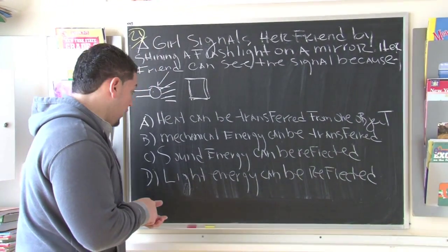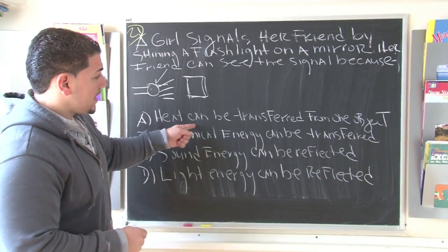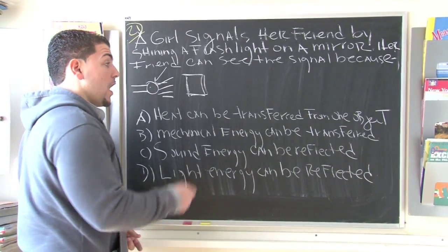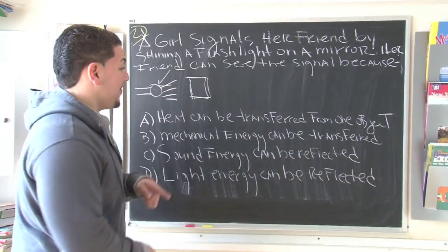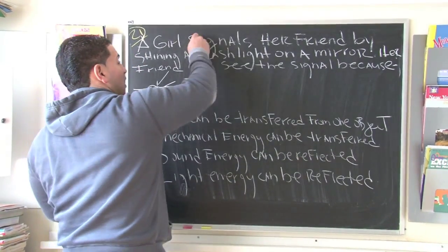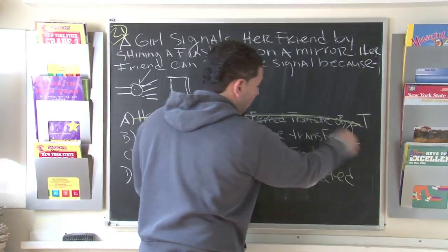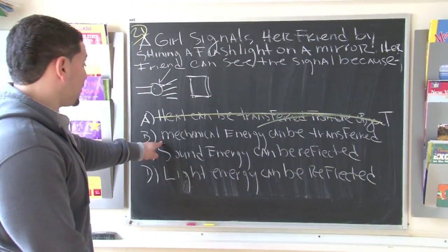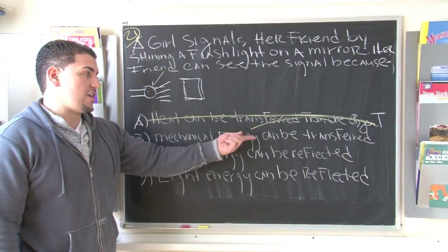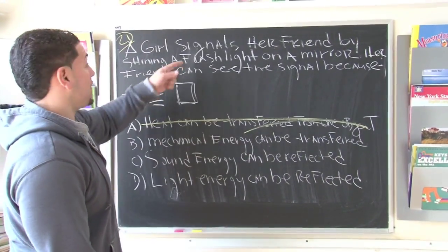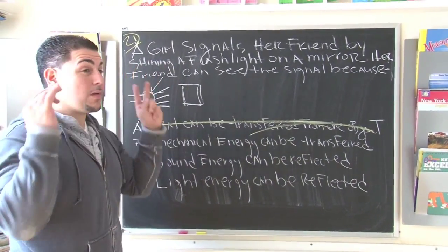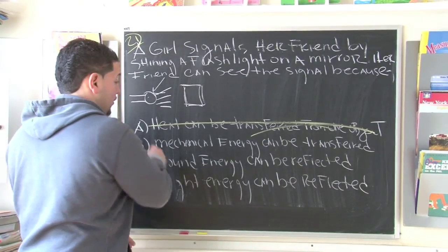Well, let's see some of the choices. One of the choices says heat can be transferred from one object. Right away, you know that can't be the right answer because nowhere up here are they talking about heat. So I'm not even going to waste my time with that one. Number two says mechanical energy can be transferred. Again, they're not talking about a bicycle or anything that has to do with mechanics. So that's out.